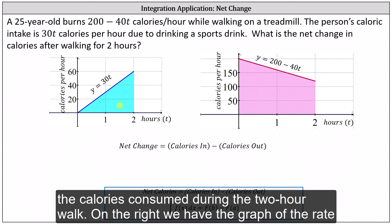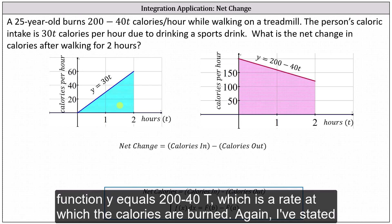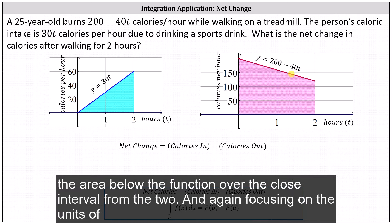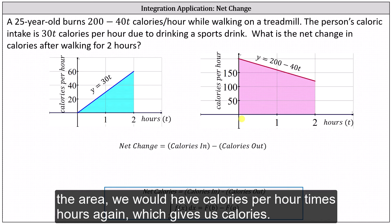On the right, we have the graph of the rate function Y equals 200 minus 40T, which is the rate at which the calories are burned. I've shaded the area below the function over the closed interval from zero to two. Focusing on the units of the area, we have calories per hour times hours, which gives us calories.